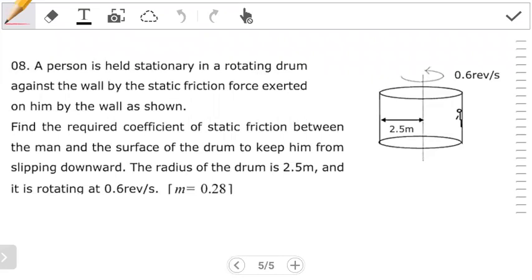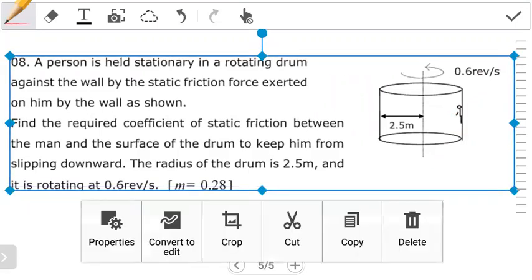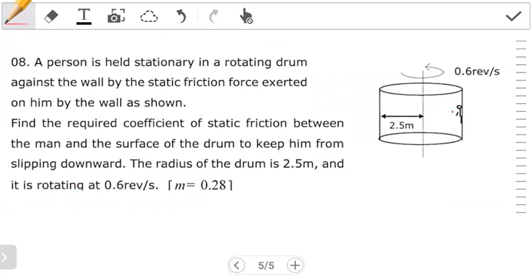So that we just try to see how best we can work it out together. In this case we have a person who is held stationary in a rotating drum against the wall by static frictional forces exerted on him by the wall as shown. Let's look at this person as an object, so if we looked at the person as an object, what we should observe is...